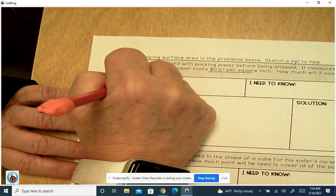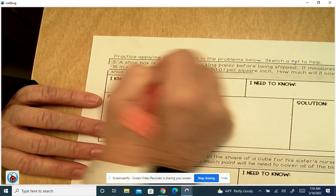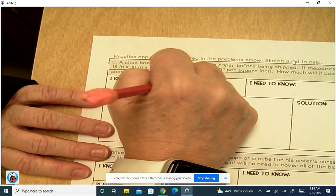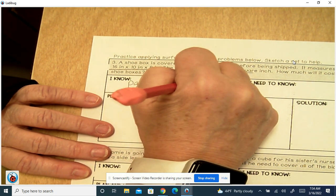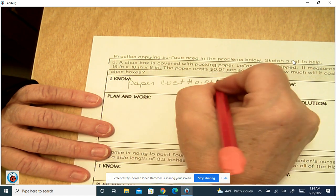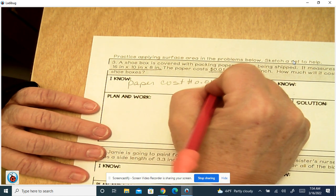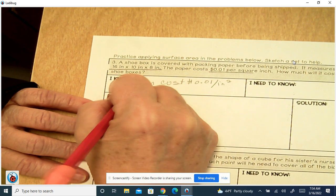What you know is the paper cost: 0.01 cents per inch squared, and you know the dimensions.